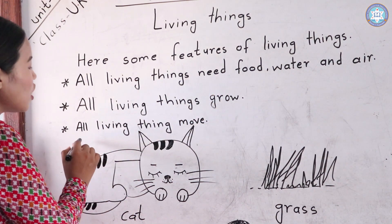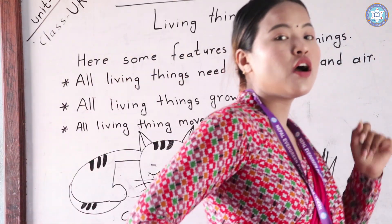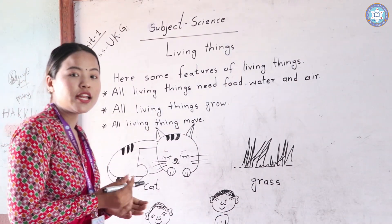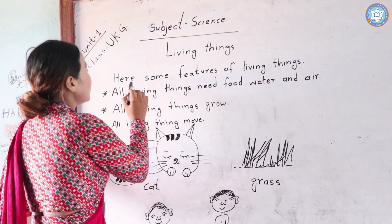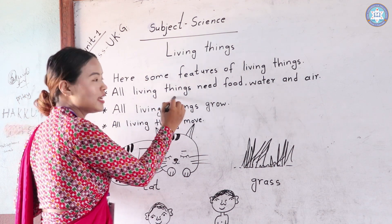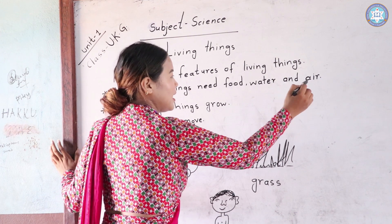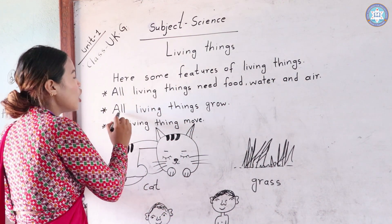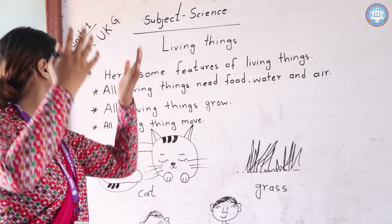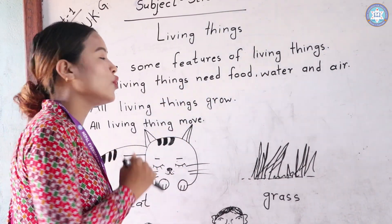And all living things move. Now your turn — repeat this: all living things need food, water, and air. All living things grow. All living things move.